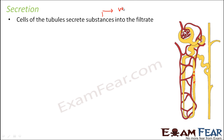These substances can be wastes like ammonia or creatinine. These kinds of wastes are still present in the blood, and they need to be removed from the blood. So from the blood they are put directly into the filtrate, so that along with the filtrate they go out in the form of urine.